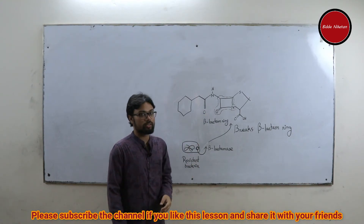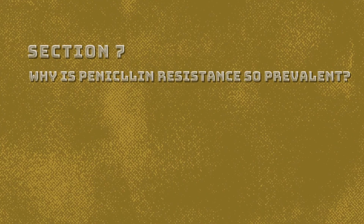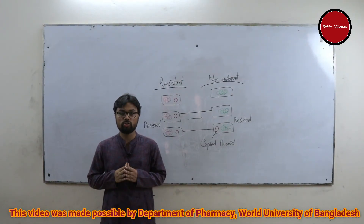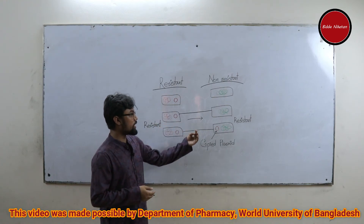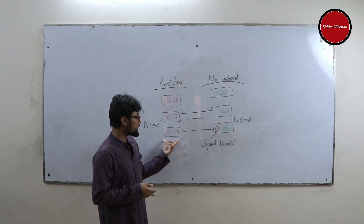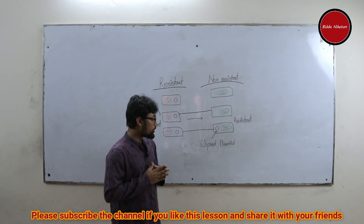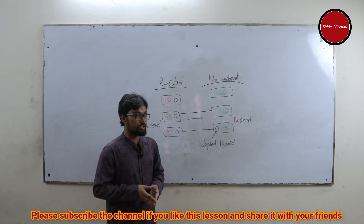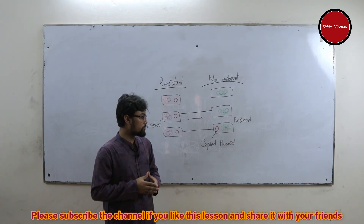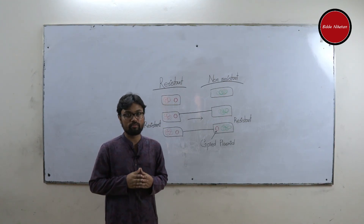These types of bacteria are known as penicillin-resistant bacteria, and this phenomenon is known as penicillin resistance. Bacteria have methods of sharing their genetic information. A resistant bacterium can share its plasmid with a non-resistant bacterium through a conjugation tube, copying the plasmid into the non-resistant bacterium and thus making it resistant. This newly formed resistant bacterium and all of its offspring will become virtually resistant.